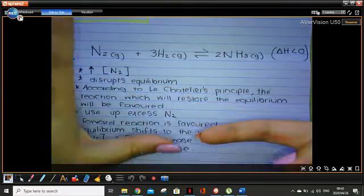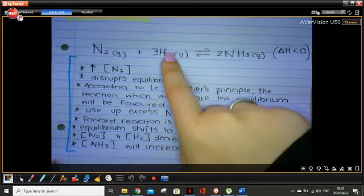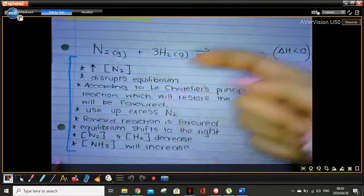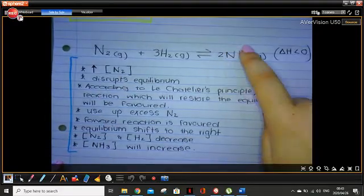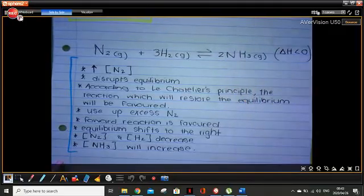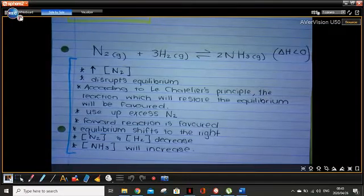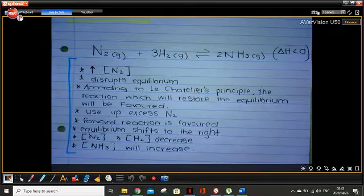So equilibrium will shift to the left. Therefore, the concentration of H₂ and N₂ will increase because we're favoring the reverse reaction, and the concentration of ammonia will decrease. If it didn't make sense, rewind, take it down as I'm saying it, and think about it.